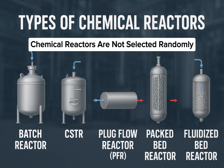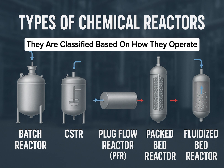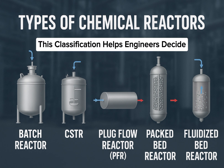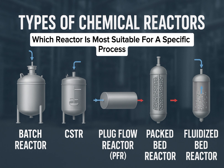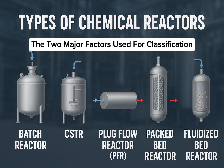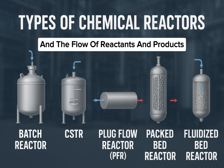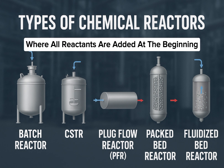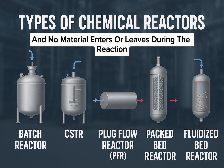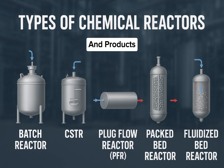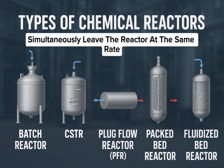Chemical reactors are classified based on how they operate and how materials move through them. This classification helps engineers decide which reactor is most suitable for a specific process. The two major factors used for classification are the mode of operation and the flow of reactants and products. Some reactors work in closed conditions where all reactants are added at the beginning and no material enters or leaves during the reaction. Others are designed for continuous use, where fresh reactants keep entering and products simultaneously leave the reactor at the same rate.